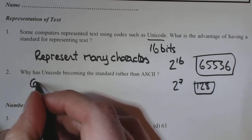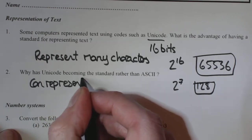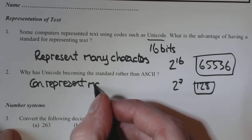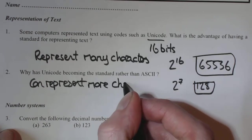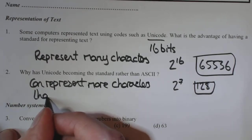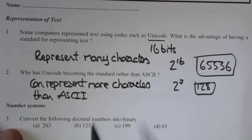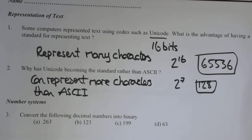And why is Unicode becoming a standard rather than ASCII? Again, it's asking the same real question. ASCII is 2 to the power of 7, which is 128. So obviously it's a lot more characters you can represent using Unicode rather than ASCII.